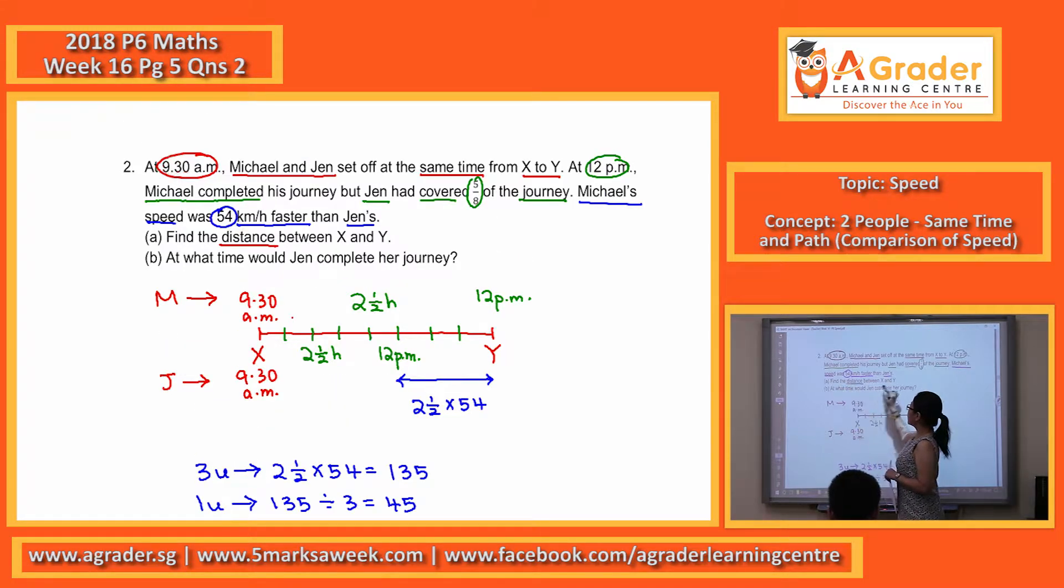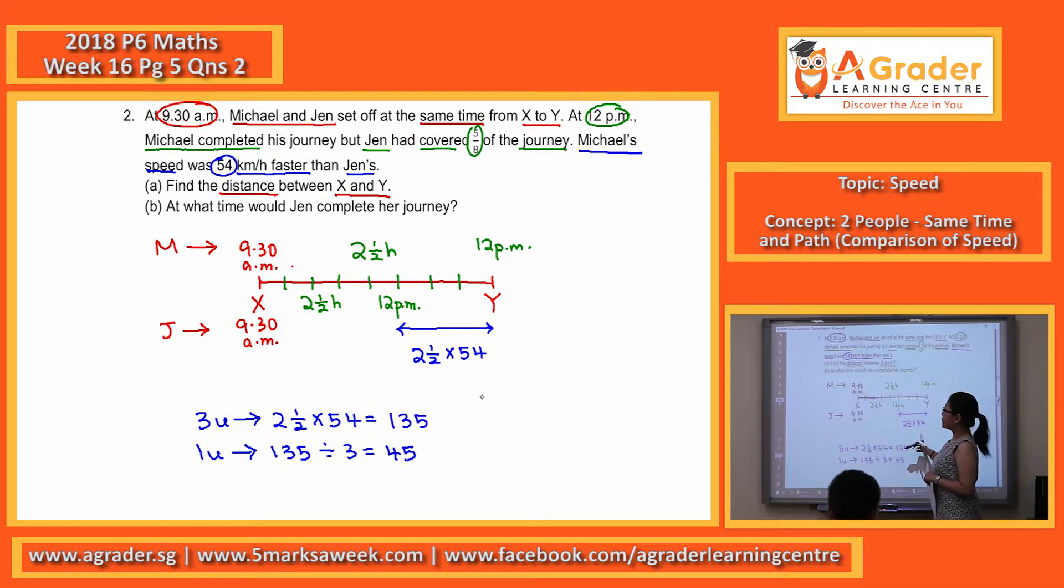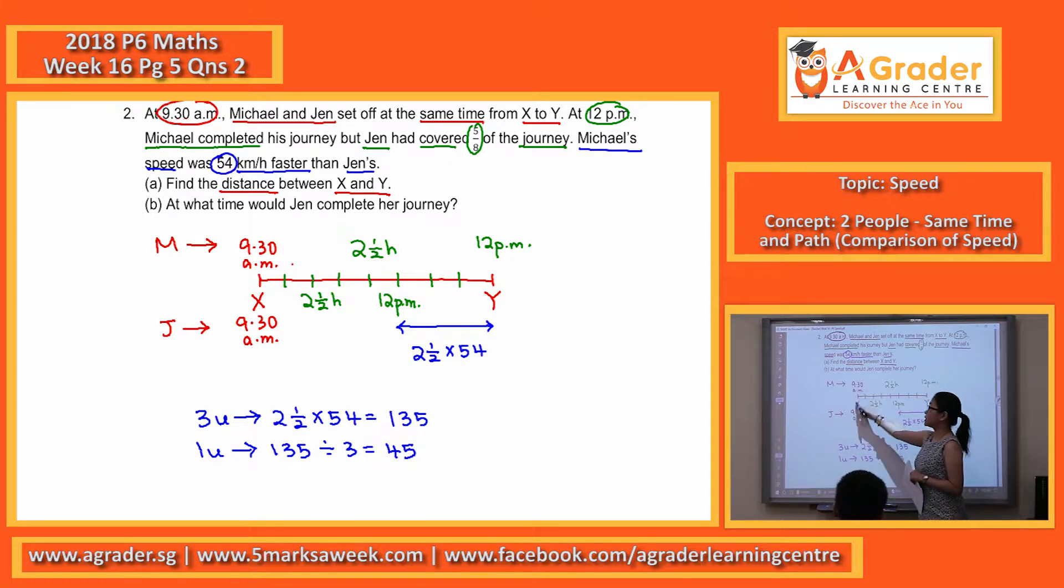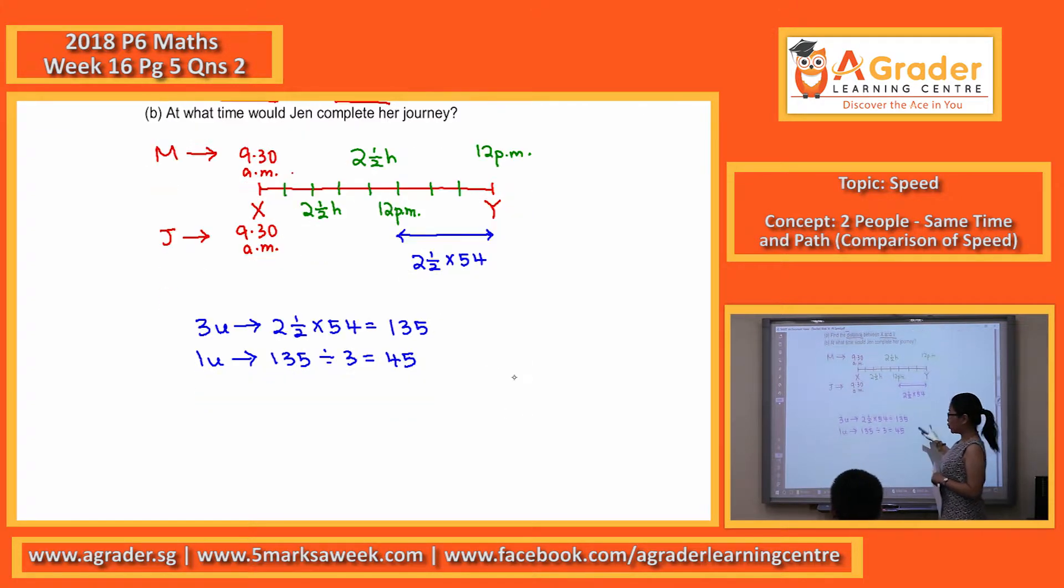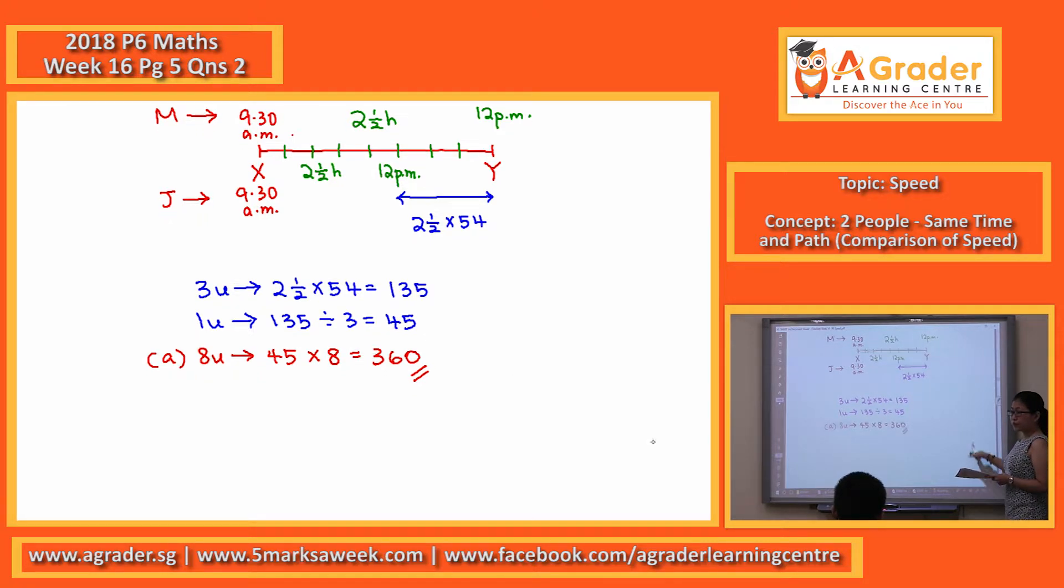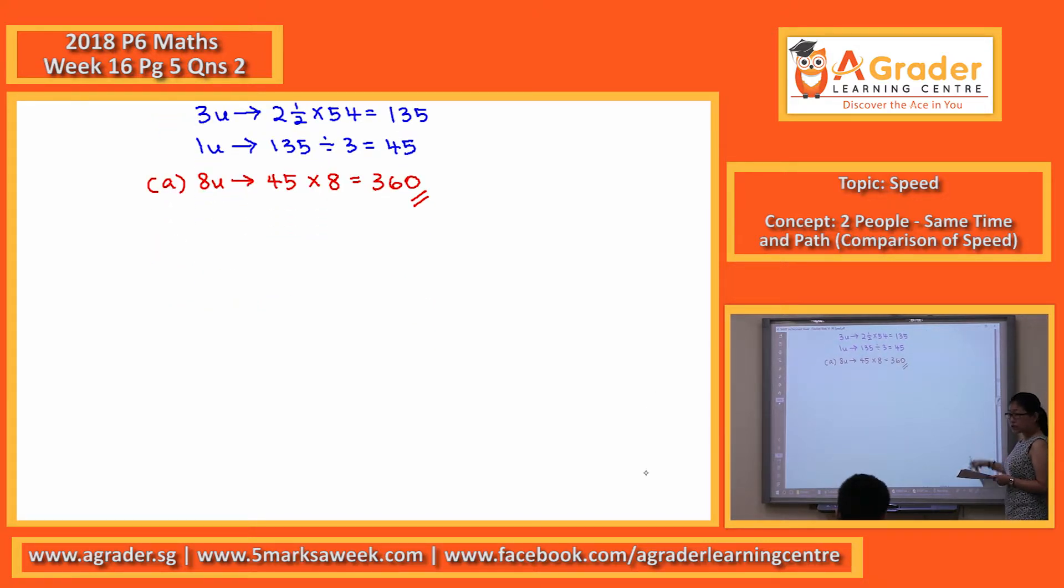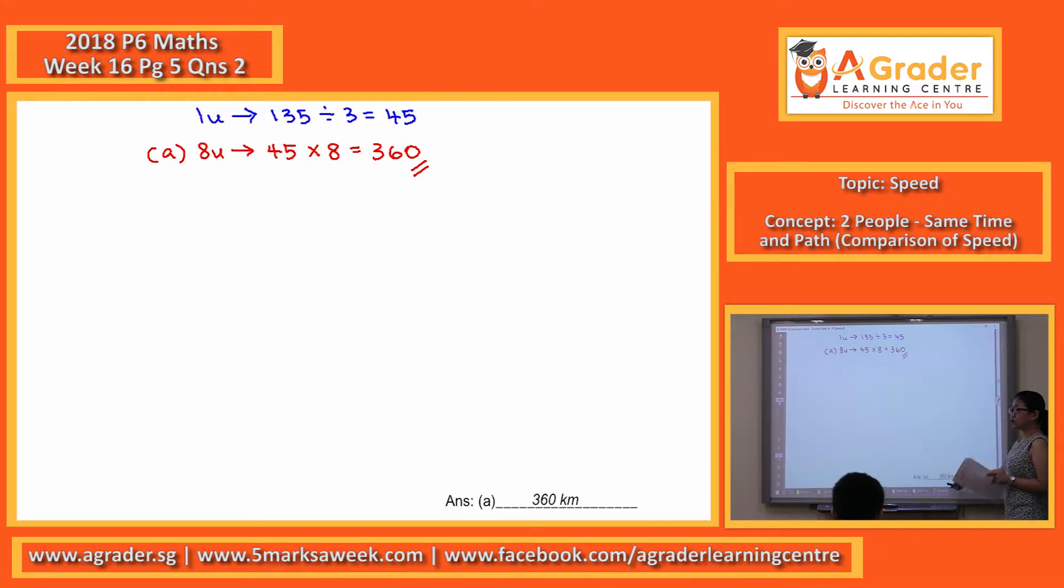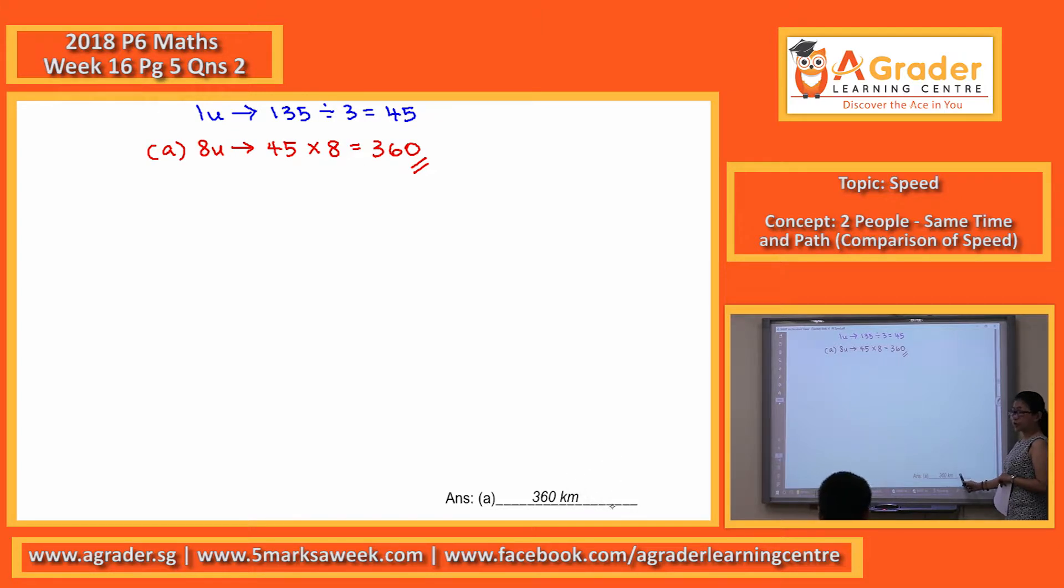So part A, the distance between X and Y. So X and Y, our total distance here is actually 8 units. So for part A, 8 units, you just need to take 45 to multiply by 8 to get the answer of 360, which, remember, it's distance that you are finding, so you've got to write 360 km for your answer here.